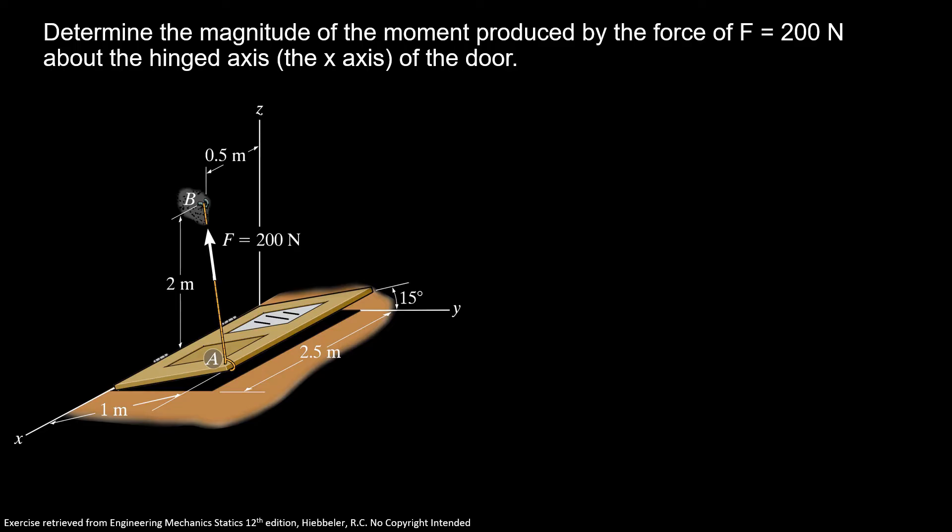Determine the magnitude of the moment produced by the force of F equals 200 newtons about the hinged axis, the x-axis, of the door. So first we have to find our vector form of F. We're going to find our vector form of our force.